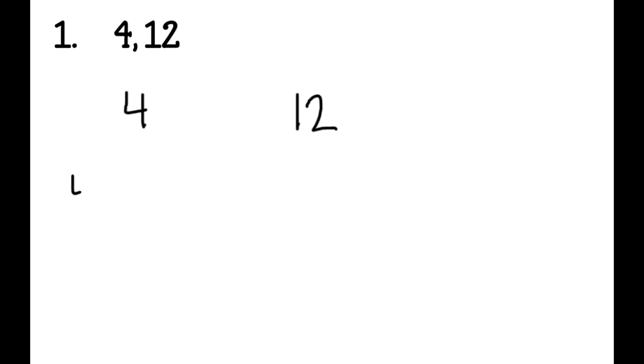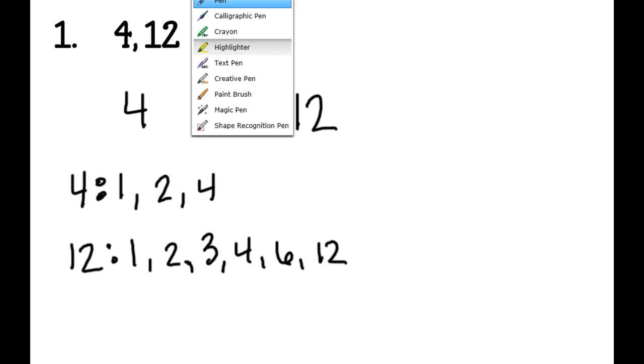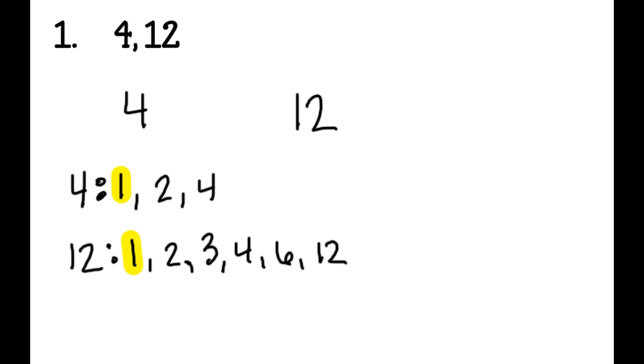On one, I'm going to do four. My factors of four are one, two, and four. My factors of twelve are one, two, three, four, six, and twelve. Then I look at what are my common factors. My common factors are one and one, two and two, and four and four. So what's the greatest common factor? The greatest common factor is the four. So my GCF would be four.